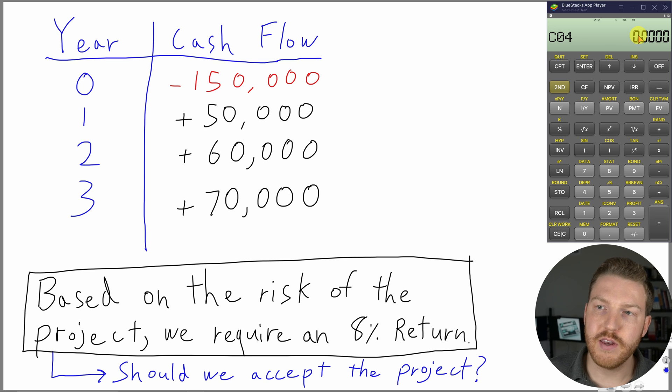Now, let's find out what is the NPV. So let's hit NPV. This I is our required rate of return, which we said was 8%. So we can just put in 8 and then enter. And then let's hit the down arrow.